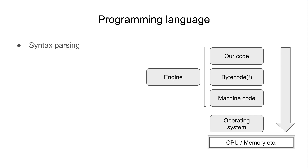Now, we need a syntax parsing mechanism. The engine needs to parse the syntax of your code. For Python and JavaScript, this parsing process is what is called an interpreter. JavaScript in its advancement is actually a mixed type — it uses both interpretation and compilation.